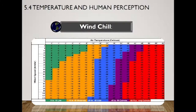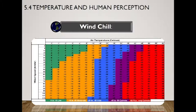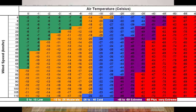The wind chill index was first created as a model derived from research by Antarctic explorers during World War II. Those venturing near the South Pole wanted to figure out how much heat the human body lost when exposed to wind. The wind chill index was adopted by the National Weather Service in the 1970s and updated in 2001 to reflect the modern understanding of human body temperature. A wind chill index accounts for a combination of air temperature and how fast the wind blows.